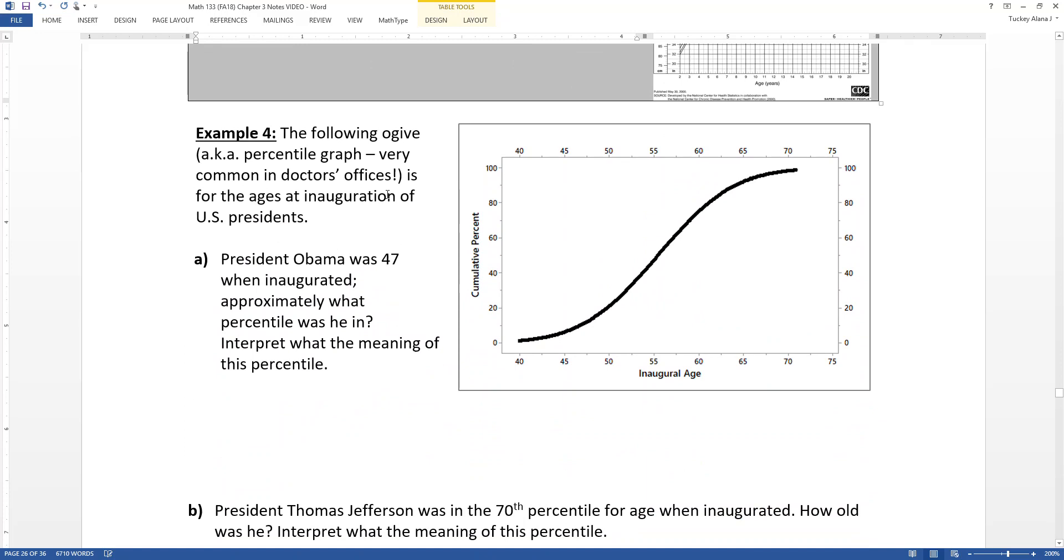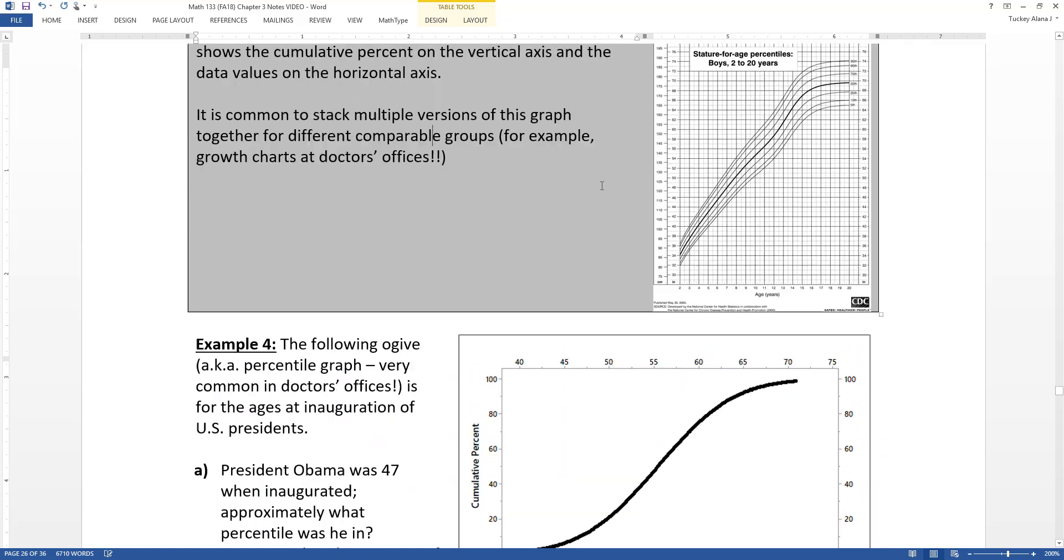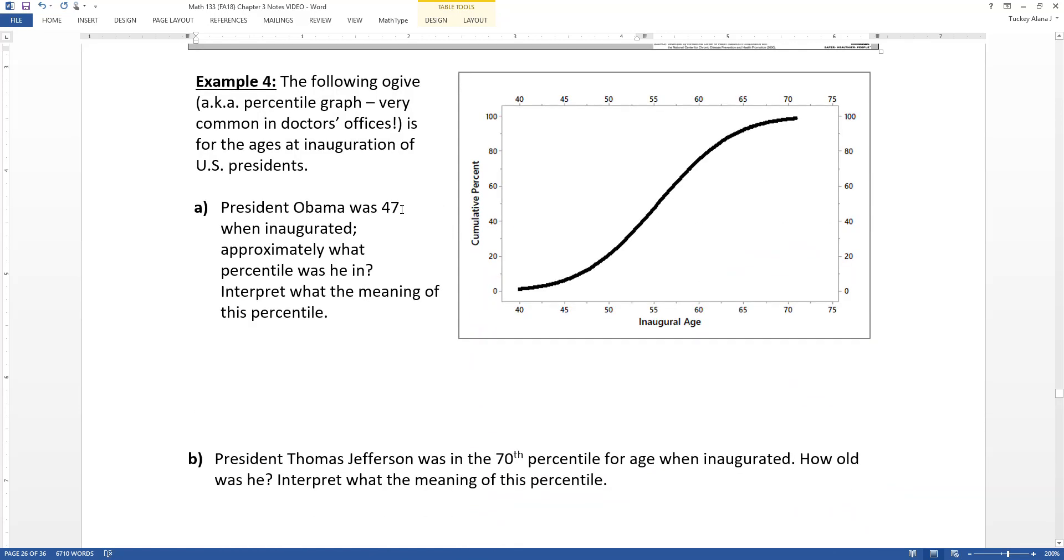Alright, so let's analyze an ogive like that, but without ten different lines in it. Let's look at just a single line growth chart, or ogive is what it's called. In other words, a percentile graph. So these are the ages at inaugurations of the U.S. presidents. And we have President Obama was 47 when he was inaugurated. Approximately what percentile was he in? So you can see I'm giving you age first, and I'm telling you that it's 47. So you can see the age axis is the horizontal axis. So you start with 47.